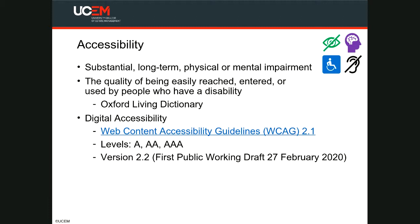Accessibility can mean many things in different contexts. For example, it can mean access to the internet in some contexts, or access to water in others. The Oxford Living Dictionary defines accessibility as the quality of being easily reached, entered, or used by people who have a disability. That is what I mean when I say accessibility: people with disabilities, whether long-term, short-term, age-related, or any other, being able to use websites and services.